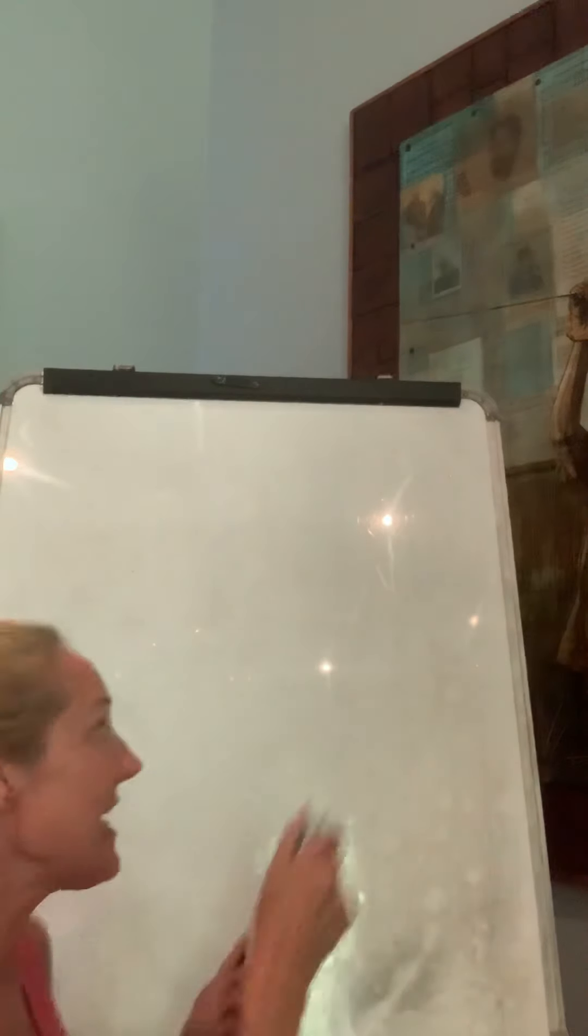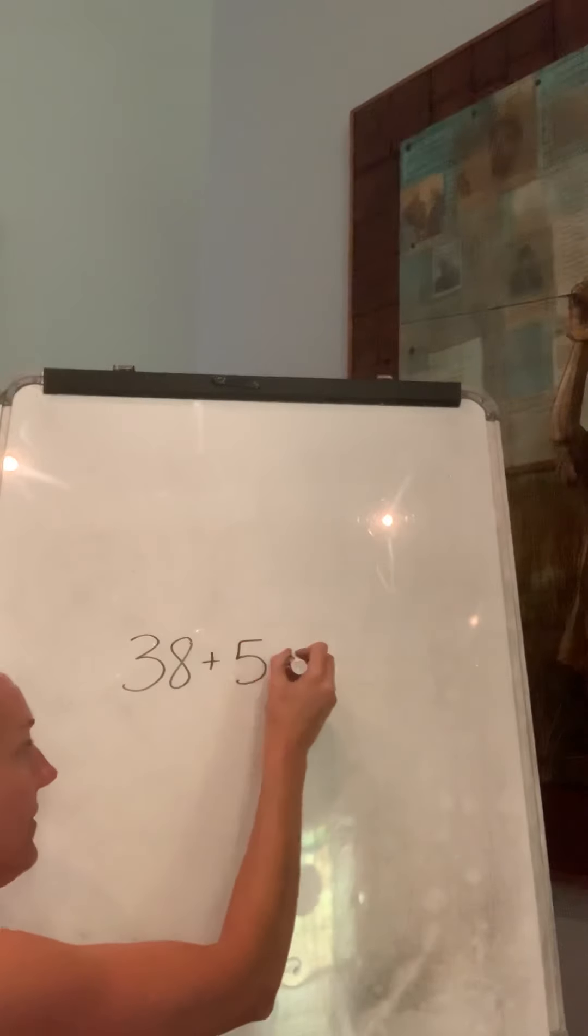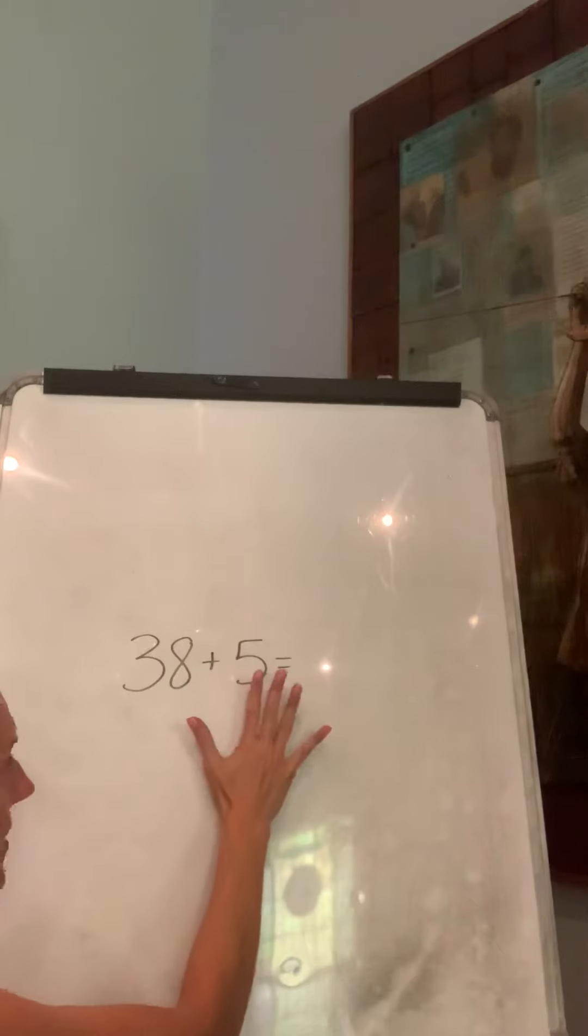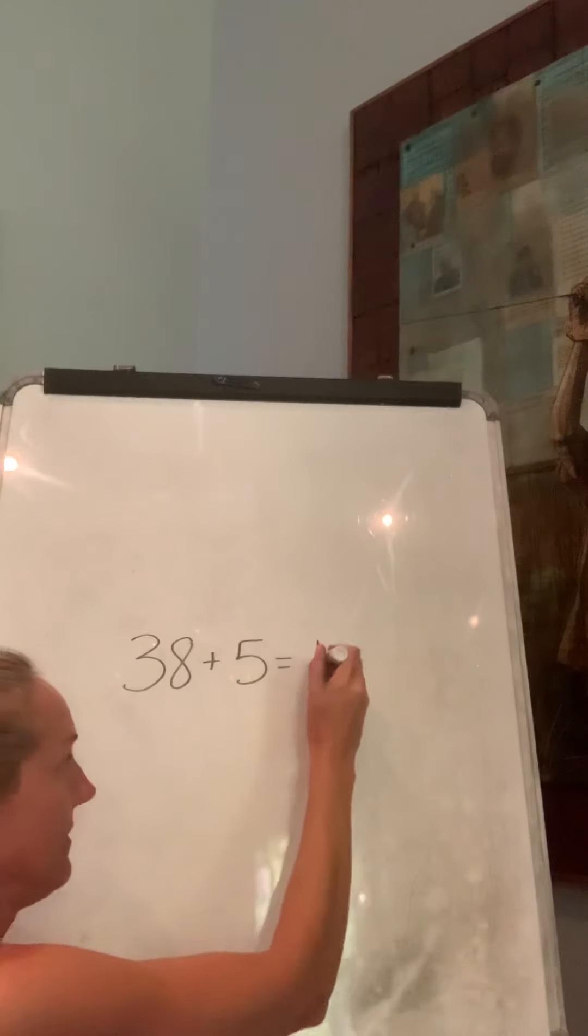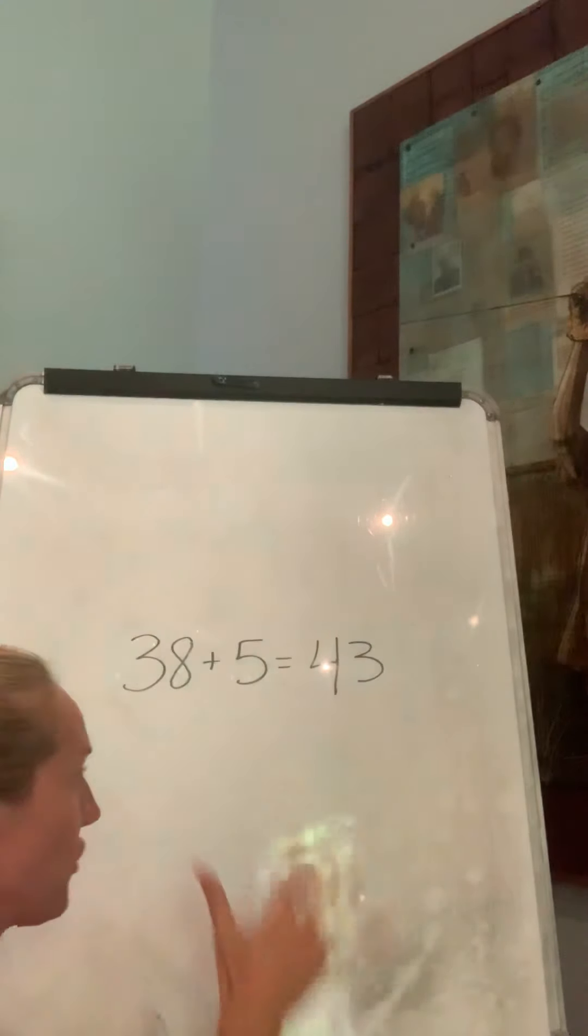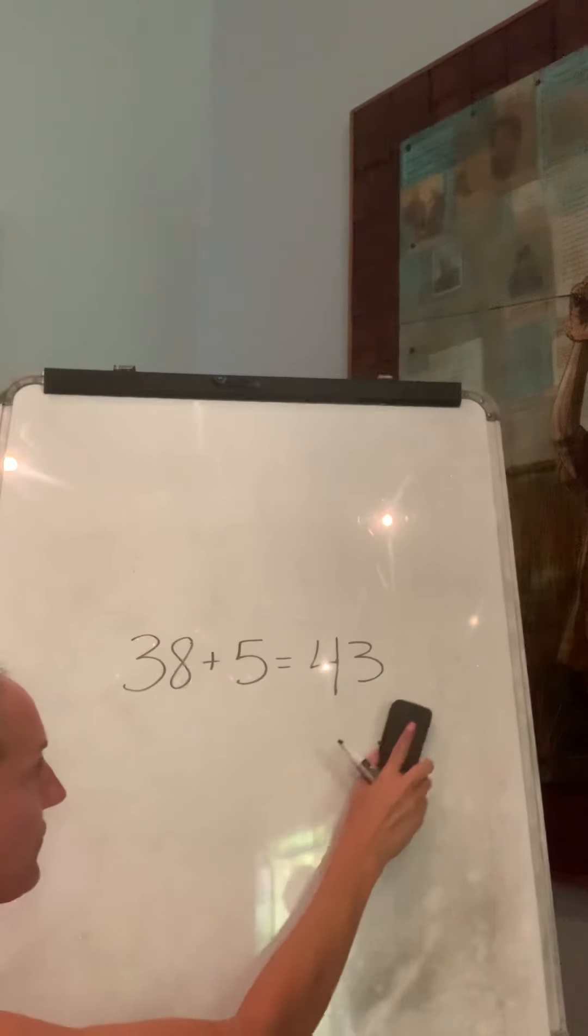Your first problem was 38 plus 5. Well, we're at 38. 38, 39, 40, 41, 42, 43. And you could have used a number line, you could have used your fingers, you could have counted in your head. Your choice on your strategy. But 38 plus 5 is 43.